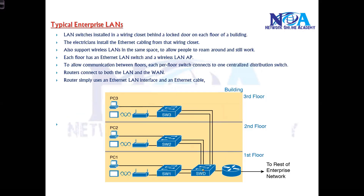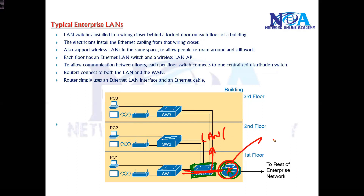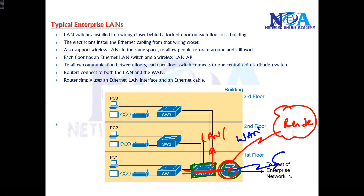From the distribution switch, or from any one of the switches, you have a connection to the router. The connection from switch to router is a LAN connection using the same Ethernet cable. This router is responsible for two things: it connects to a remote branch — which we call a WAN connection — and it also connects to the internet, so generally it connects to both.